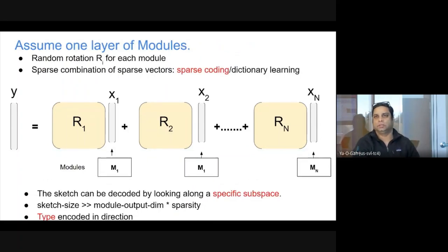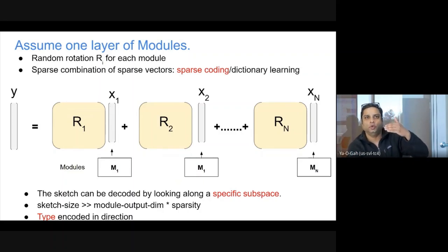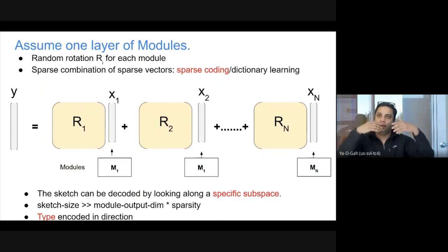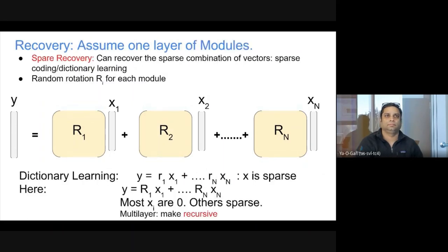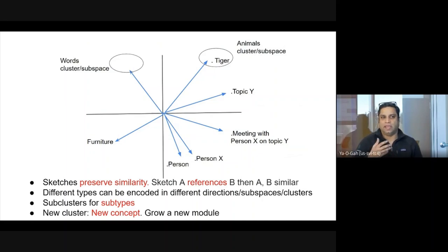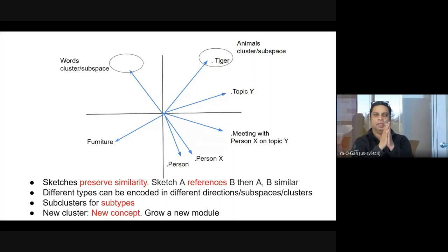XI is not just the output of module I, but also recursively what has been fed into it. When given Y, you can get these XIs and recursively go down to recover what previous-layer modules fired. This gives a uniform way of sketching every activity into a sketch space. One important property is that similar events result in similar sketches — if you meet the same person over coffee again, pretty much the same modules fire with almost the same values, so the final dense sketches point in almost the same direction.